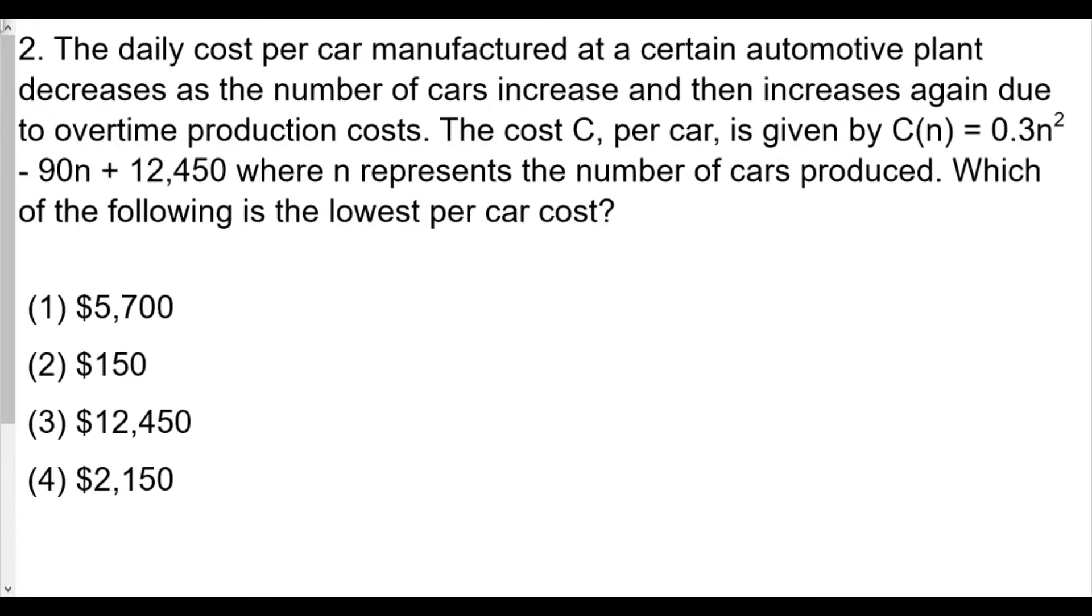For number two, the daily cost per car manufactured at a certain automotive plant decreases as the number of cars increases, then increases again due to overtime production costs. The cost C per car is given by C(n) = 0.3n² - 90n + 12,450, where n represents the number of cars produced. Which of the following is the lowest per car cost? Again, for highest and lowest value, we're looking for the axis of symmetry.